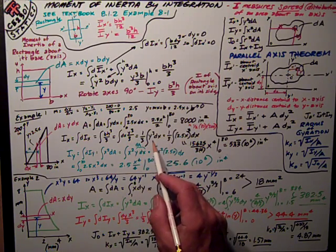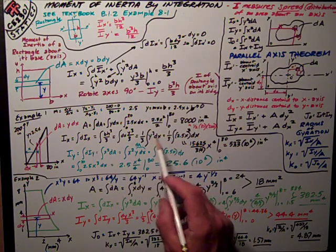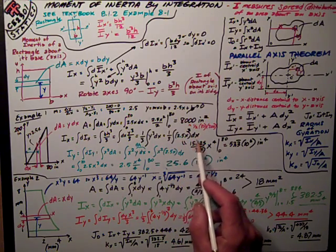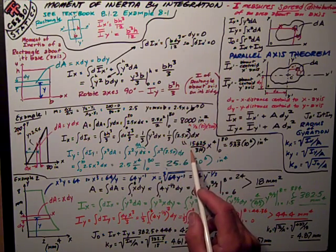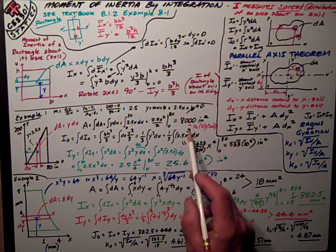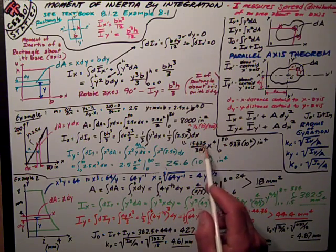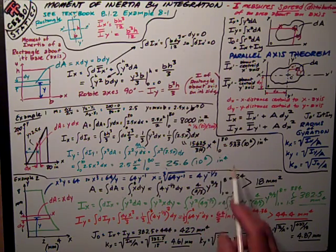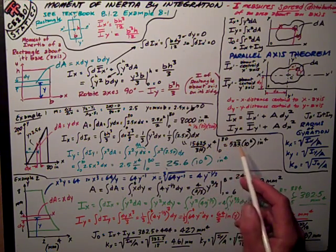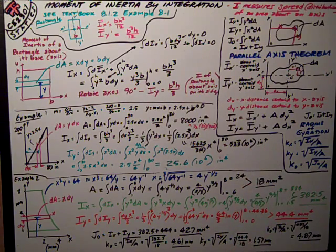Bring the one-third out of the integral and then substitute in for y what it is, 2.5x, cube it, and do the integration. I get 15.625, which is 2.5³ divided by 3 divided by 4 for this integral, times x to the fourth. Evaluate that from 0 to 80, and it's 53.3 repeating times 10⁶ inches to the fourth.